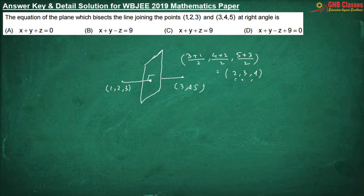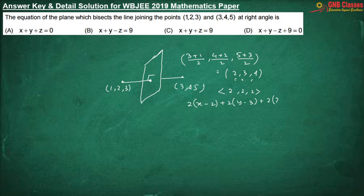The plane is intersecting at right angles, so the direction ratios of the line joining the two points become the normal to the plane: (2, 2, 2). The plane passes through (2, 3, 4) with normal (2, 2, 2), giving the equation x + y + z = 9.